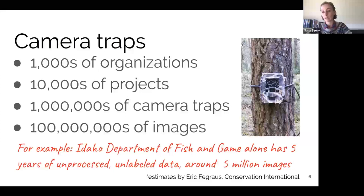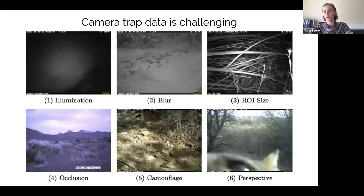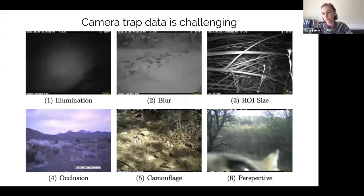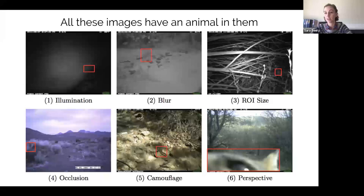Part of the problem is that camera trap data is really challenging. Not only do you get a lot of images, but they can be really difficult to categorize, even for humans. Because there's not a human taking the photo, you get weird stuff: really bad illumination, blurry animals, the region of interest being very small in the frame. The animals are heavily occluded, some are naturally camouflaged — prey animals are basically designed to blend in with the background — and you sometimes get really odd perspectives because there's no guarantee an animal is going to pose in the perfect orientation to a camera trap. Every single one of these images has an animal in it, and those animals are hard to find, let alone categorize.